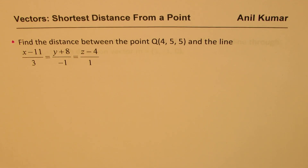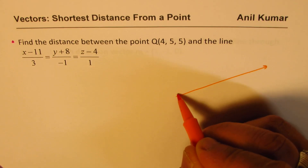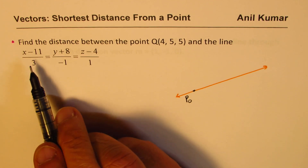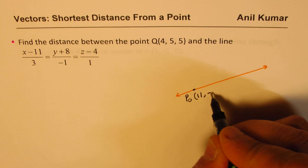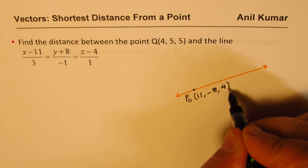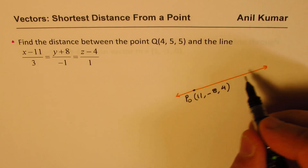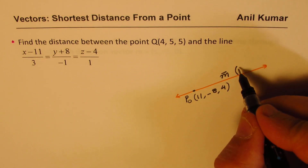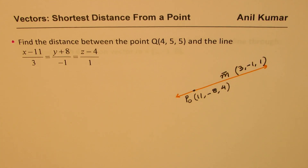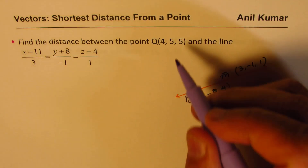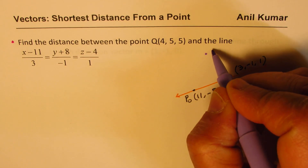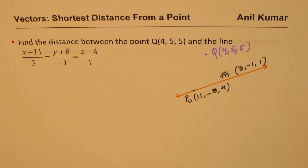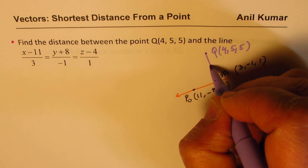We are given a line with a point on it — let's call this point P0 — with coordinates (11, -8, 4). The direction vector of the line is (3, -1, 1). We are also given an external point Q which is (4, 5, 5). The shortest distance from Q to the line will definitely be perpendicular.